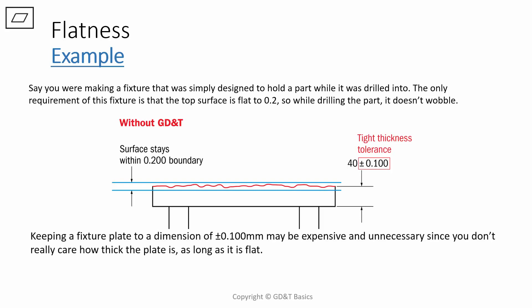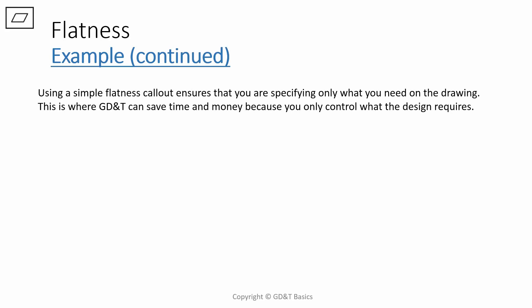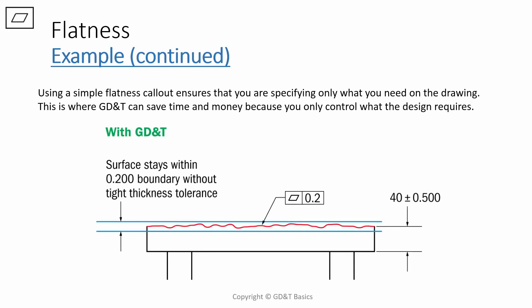Keeping a fixture plate to a dimension of plus or minus 0.1 may be expensive and unnecessary, since you really don't care how thick the plate is, you just want to make sure that the top surface is flat. How could you redesign this part so that the surface remains flat while allowing you to open up your thickness tolerance? Well, if you've been paying attention during this presentation, you know that using a simple flatness callout ensures that you are only specifying what you need on the drawing. This is where GD&T can save time and money. You're only controlling what the design functionally requires. You can see adding the 0.2 flatness to the top surface still keeps your 0.2 boundary. However, your thickness tolerance can now be open to whatever is necessary for it. Keep in mind though, you're not orienting this plane in any way, you're only making sure that it's flat.